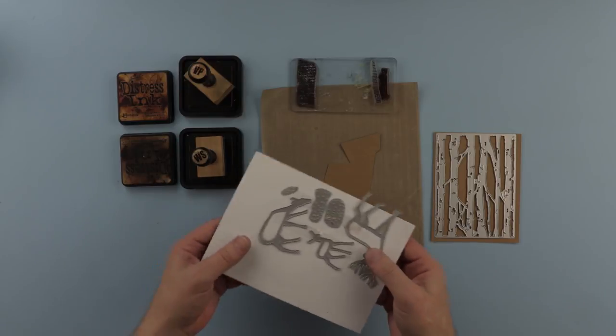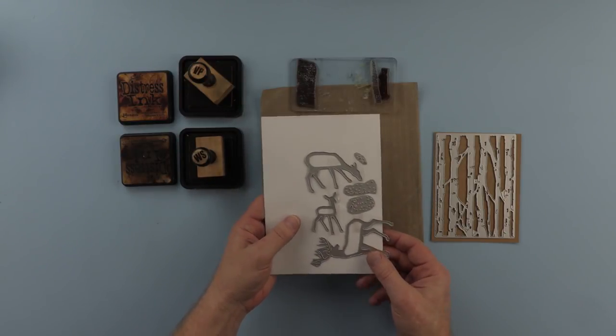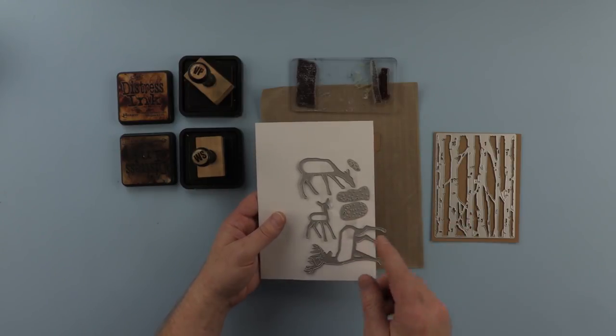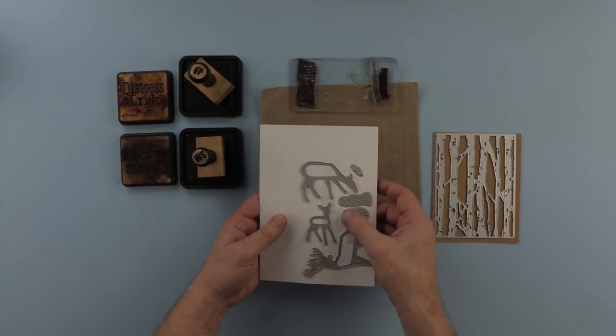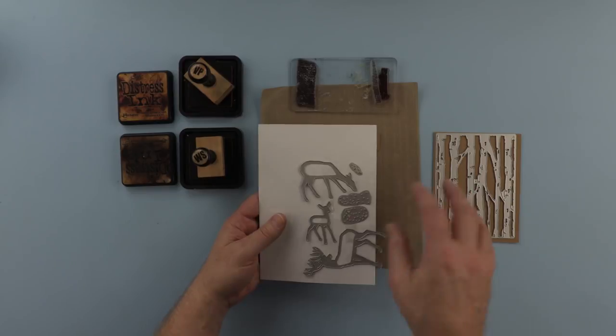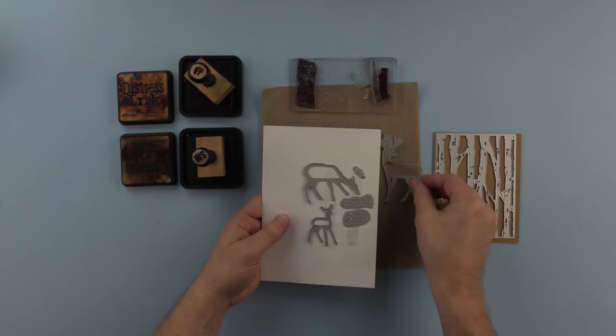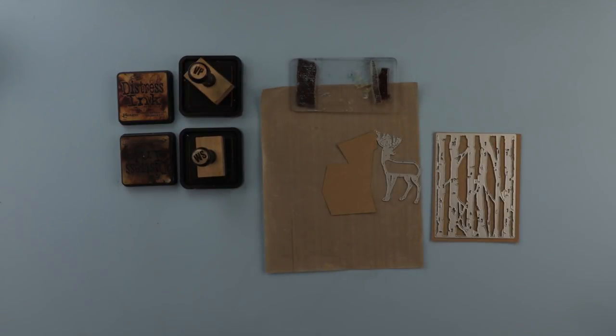Now we're also using this set, this is the woodland deer, three deer—there's mummy, daddy, and baby—and you've got these lovely detail dies to add detail to the flanks wherever you need it and we're going to use the stag today, that's the one we're going to use.